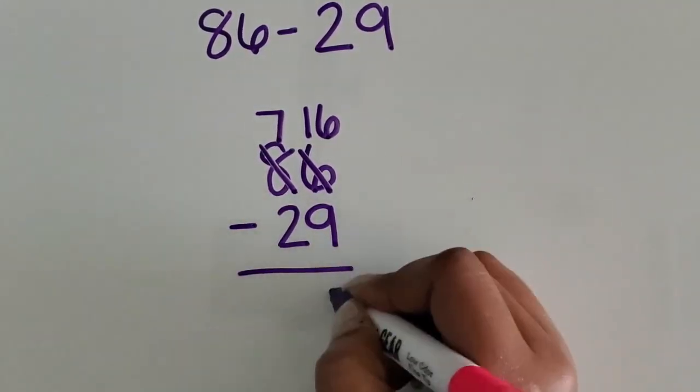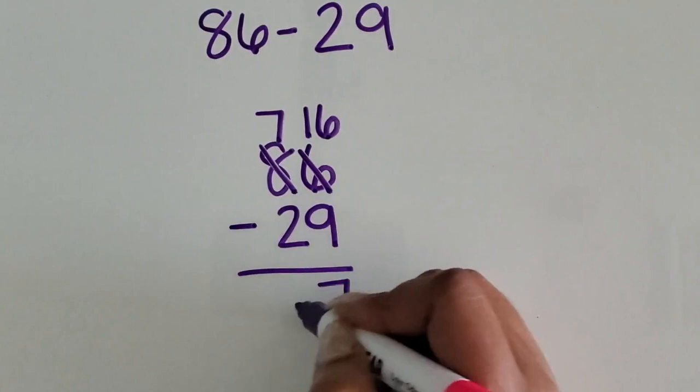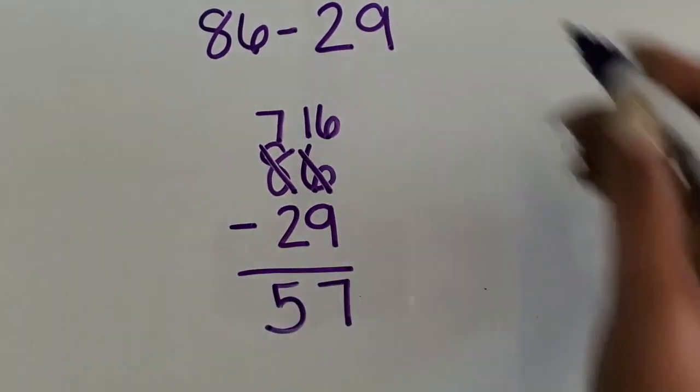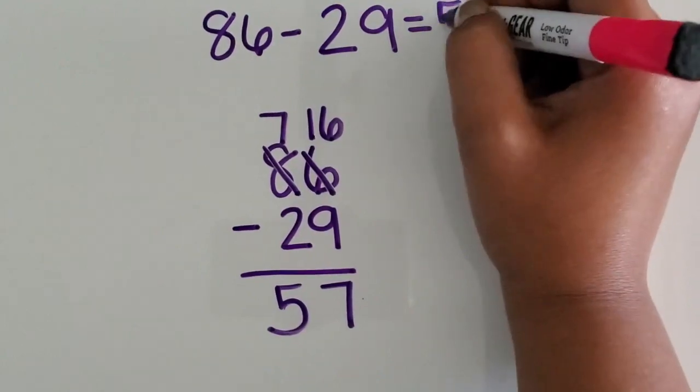16 1s minus 9 1s is 7 1s. 7 10s minus 2 10s is 5 10s. The difference between 86 and 29 is 57.